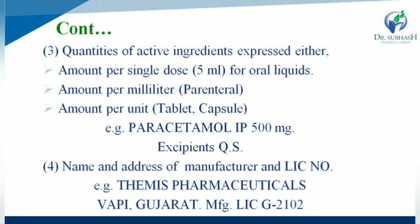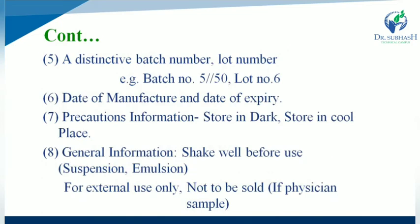To summarize general labeling requirements: name of drug substance, quantity of drug substance, name and address of manufacturer, license number, expiry date, batch number, and manufacturing date. A distinctive batch number or lot number is also mentioned on labels — for example, batch number 5 or lot number 6 — along with date of manufacture and date of expiry, and precautions information.